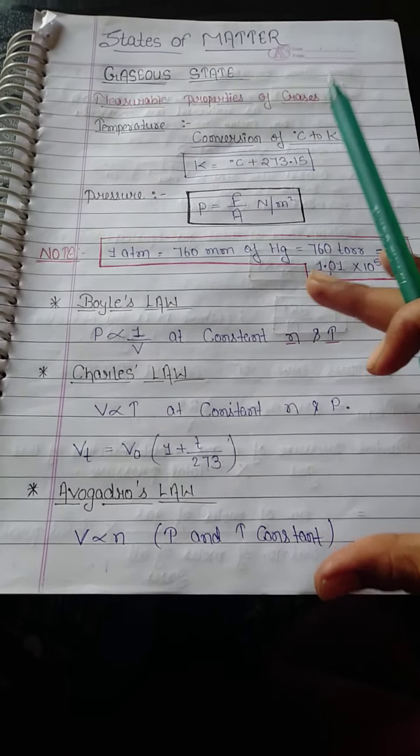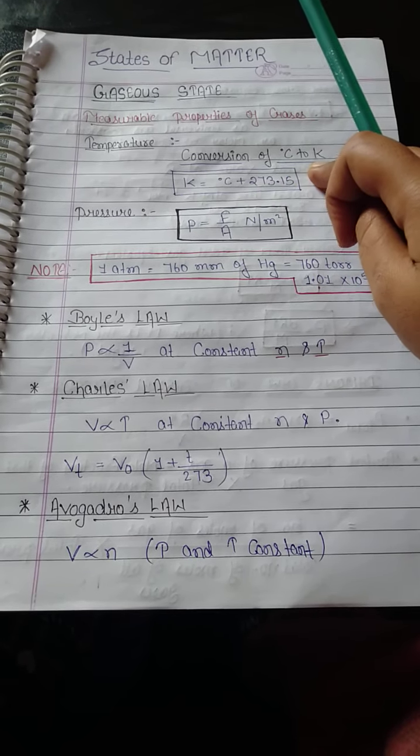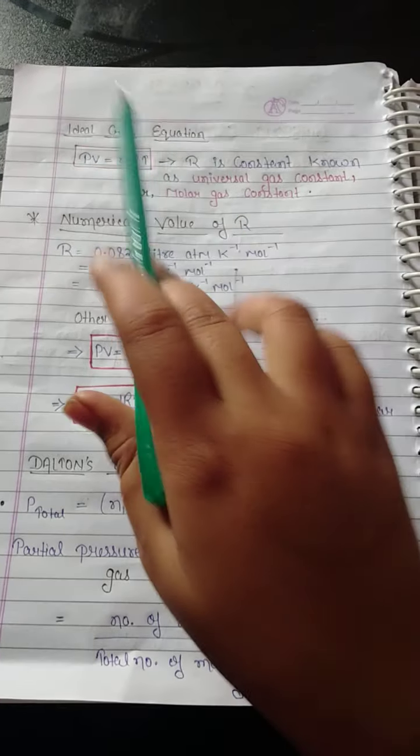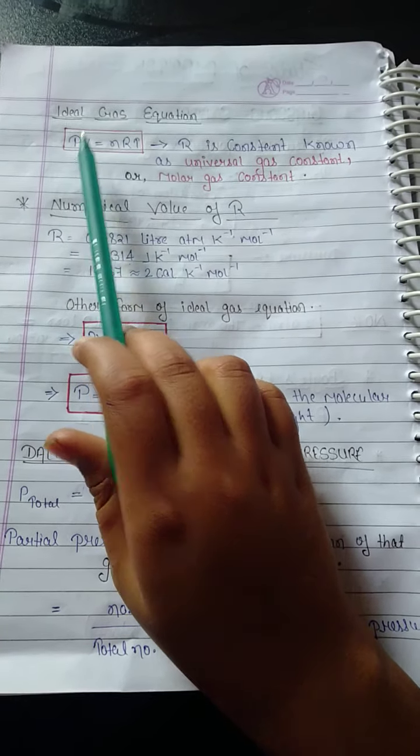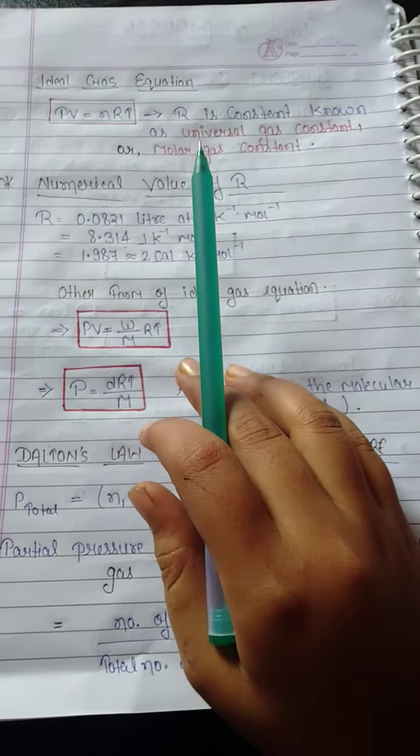And this to convert Celsius into Kelvin. Now here, ideal gas equation. Ideal gas equation PV is equal to nRT. You all know that ideal gas equation.